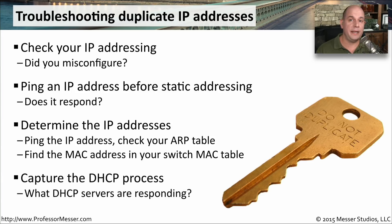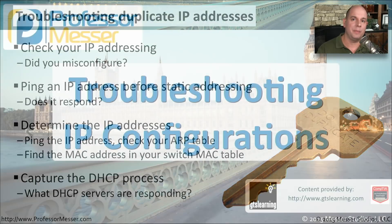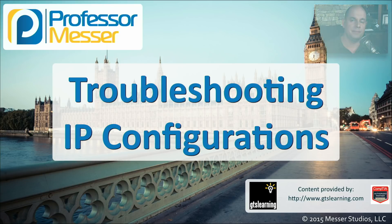If there's a rogue DHCP server, you're going to need to capture packets. It's easy to capture on a local device, but you may need a tap or a hub in place so you can see what is happening during the DHCP request and any responses coming from any DHCP servers.